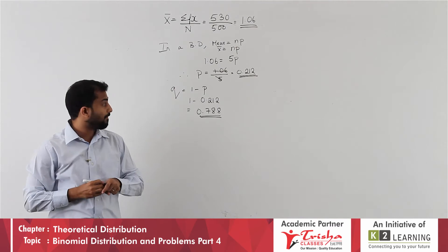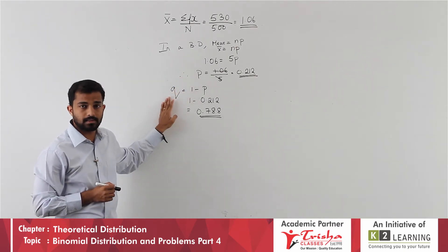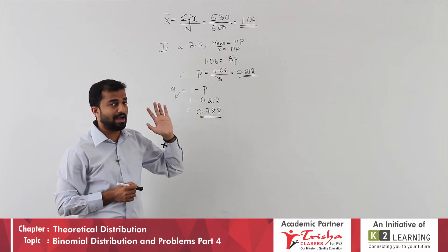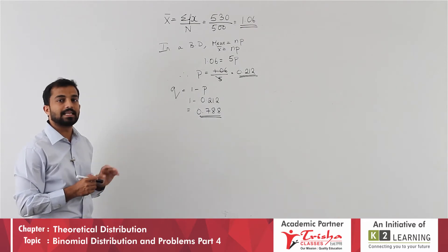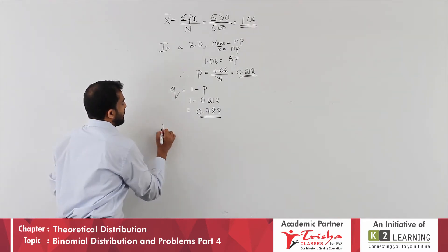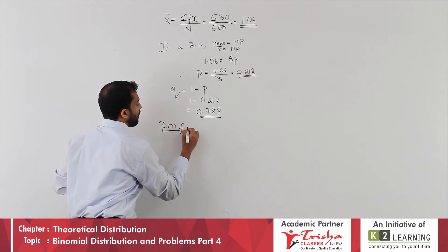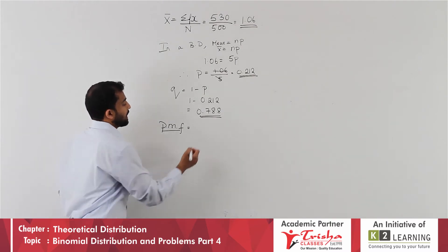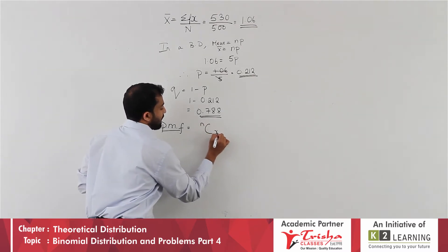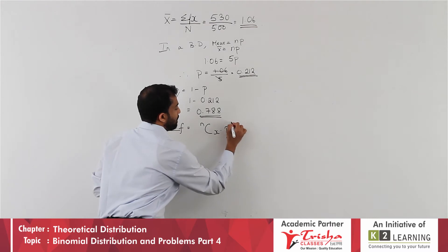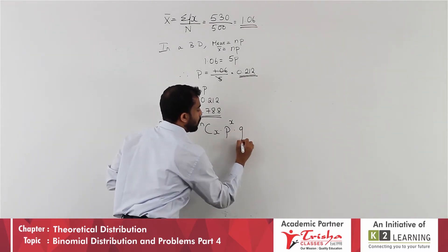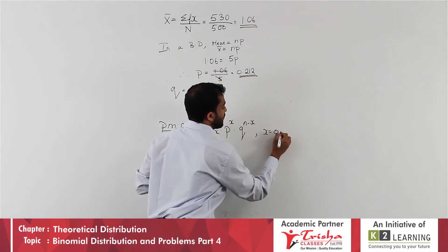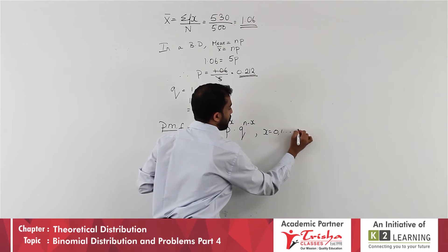We now have p = 0.212, q = 0.788, and n = 5. The next step is to write the PMF of binomial distribution: P(x) = nCx × p^x × q^(n−x), for x = 0, 1, 2, up to n.